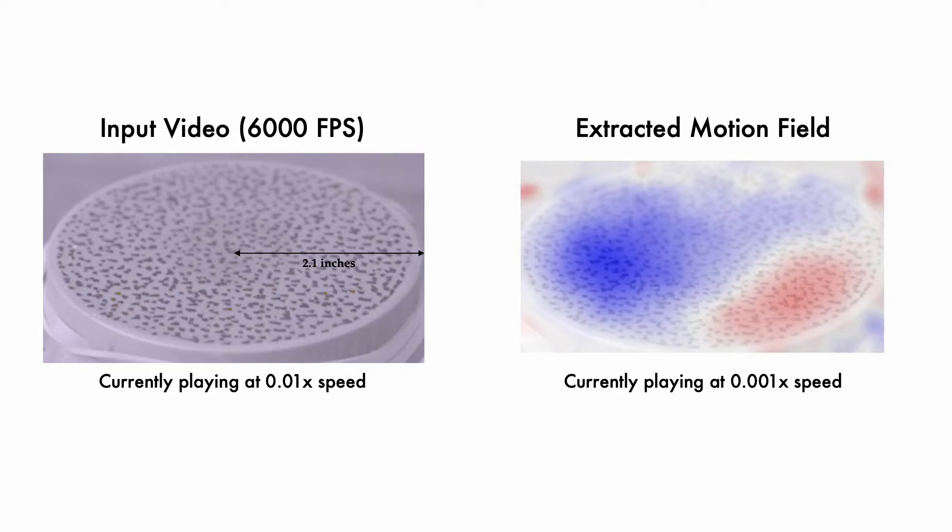In one of our experiments, we study a dataset of real videos of drumheads. Here is one example. Note that the human eye cannot tell the exact spatial distribution of material properties based on this video alone.